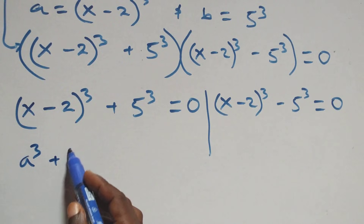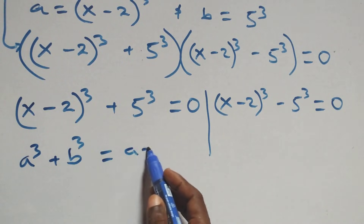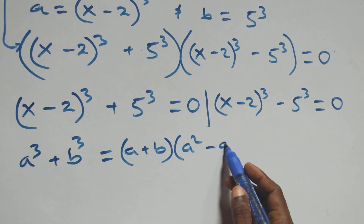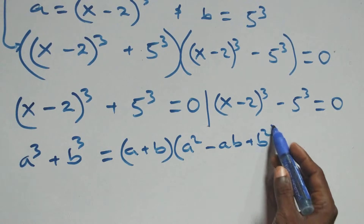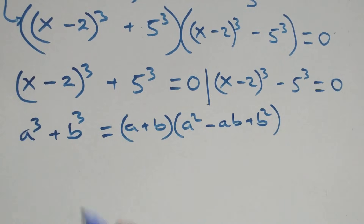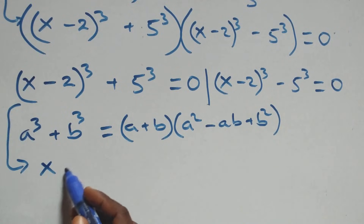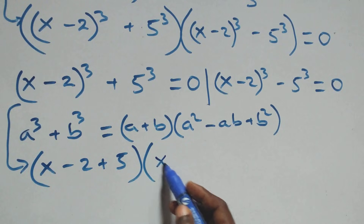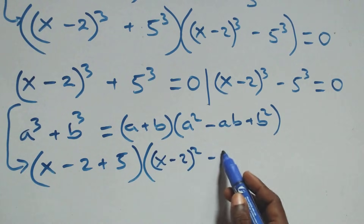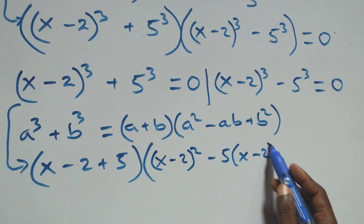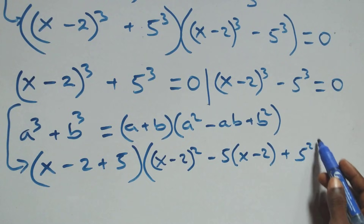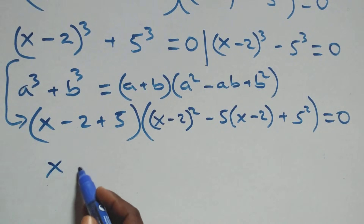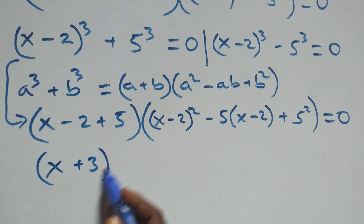Solving the first case, this follows from a cubed plus b cubed, which factors as (a plus b) times open bracket a squared minus ab plus b squared. So this becomes (x minus 2 plus 5) times open bracket (x minus 2) squared minus 5 times (x minus 2) plus 5 squared, close bracket, equals to 0.